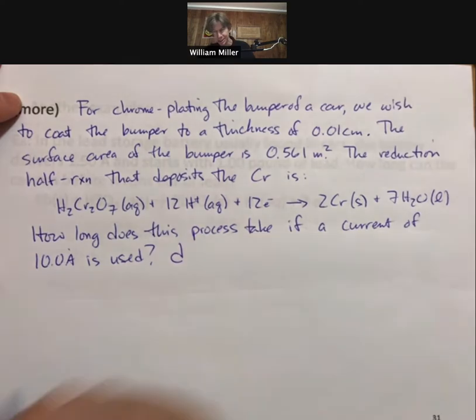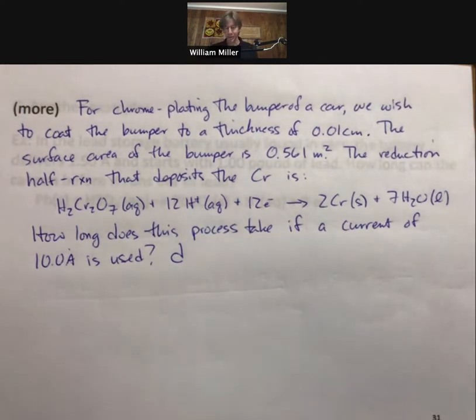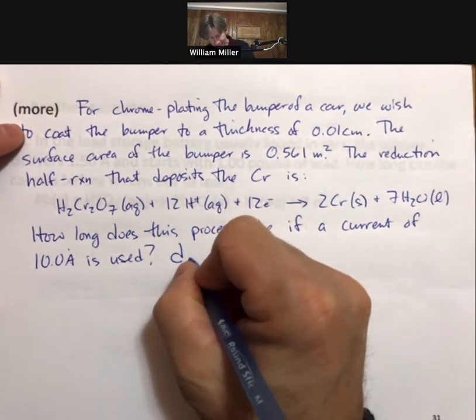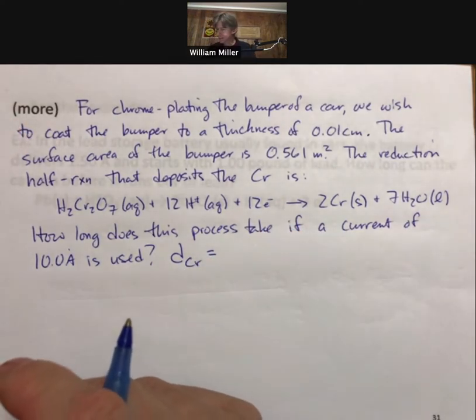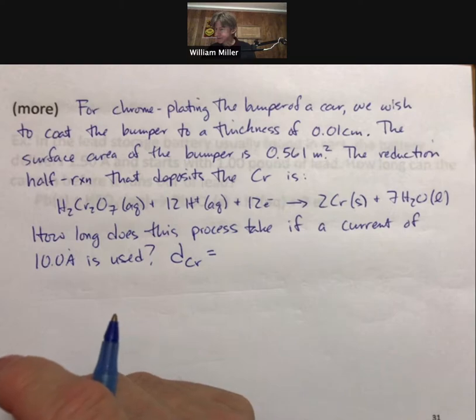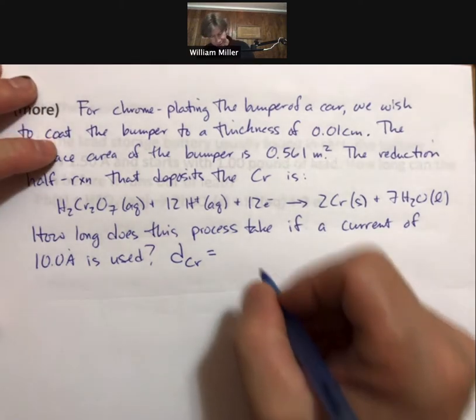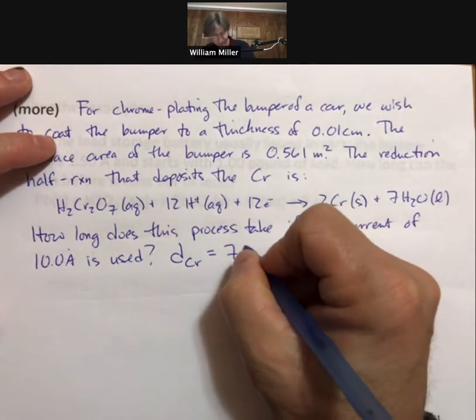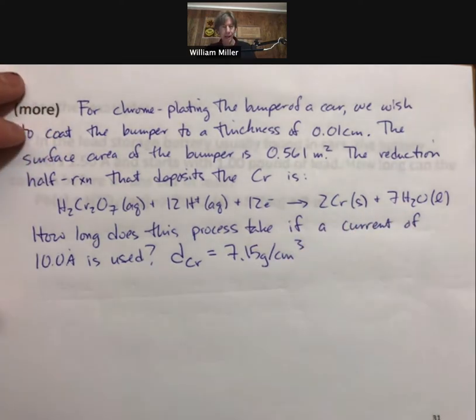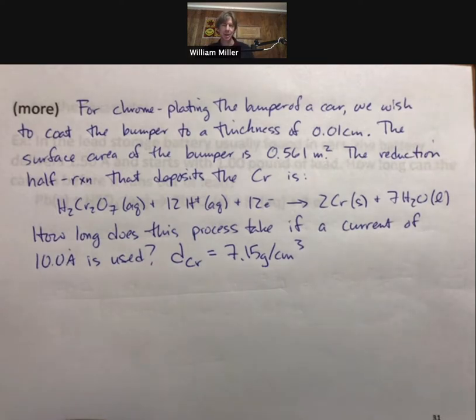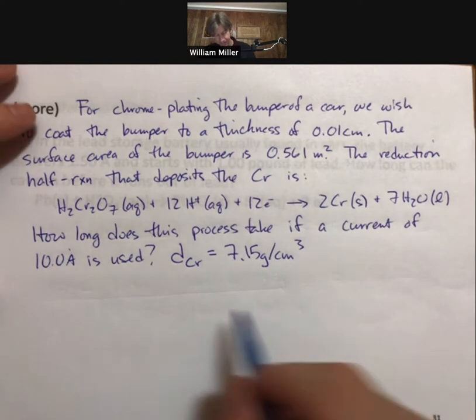I did leave out one piece of information, and that is the density of chromium. The density of chromium is 7.15 grams per centimeter cubed. And there is a similar homework problem, not chrome plating, it's going to be some other elements that we're going to be laying down.